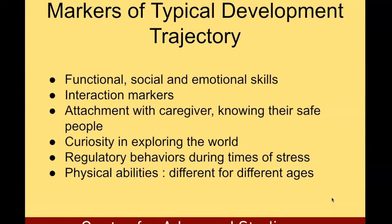There are certain markers of a typical developmental trajectory of the brain: functional, social, and emotional skills; interaction markers; attachment with caregivers and knowing they are safe people; curiosity in exploring the world; regulatory behaviors during different types of stress; and physical abilities, which differ for different stages.